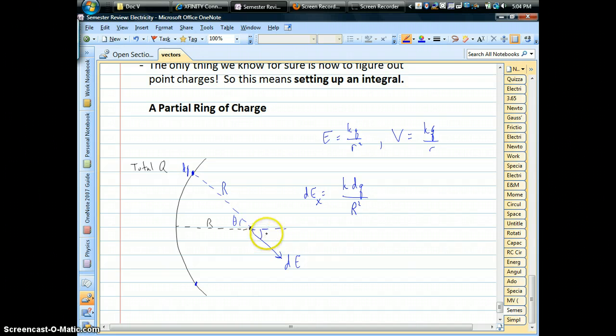So on our picture, if we can figure out what that angle is right there, we'd have to take our total field and multiply it by the cosine of that angle.